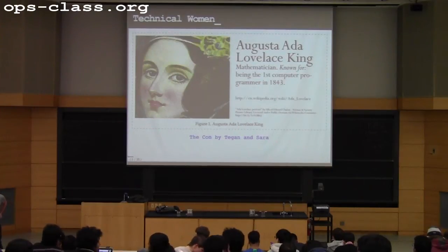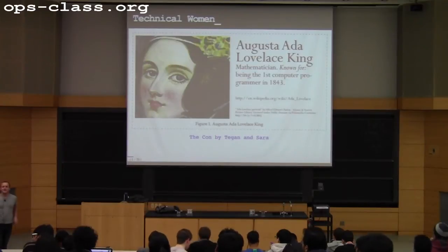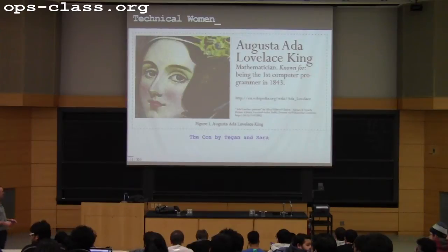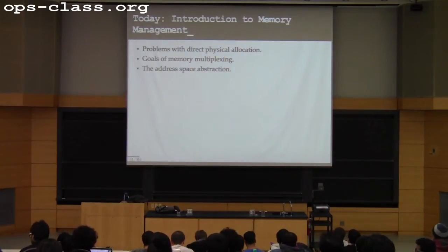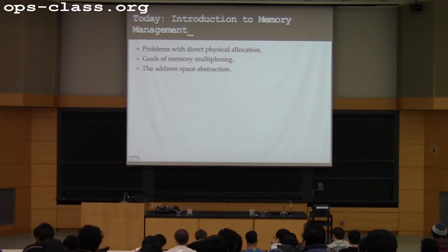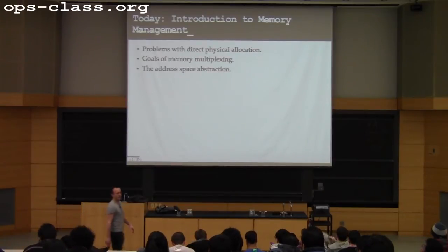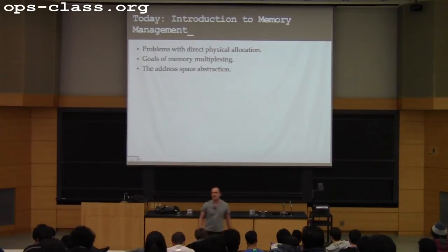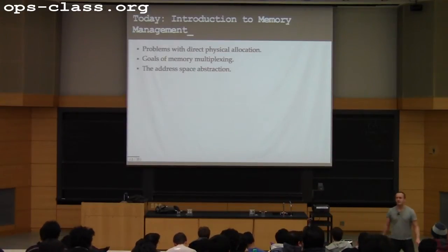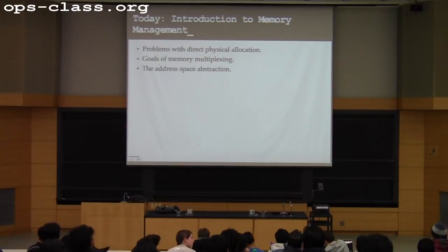We are going to begin the second unit in the class, which is my favorite. It's on memory management. We've talked about how we abstract the CPU, and now we're going to talk about how we abstract memory. In many ways, this is going to feel like we reuse some of the same ideas we used when we learned how to multiplex and abstract the CPU. But memory is quite different, and there are some really beautiful ideas that emerge when we talk about how to handle memory.